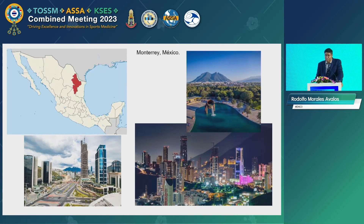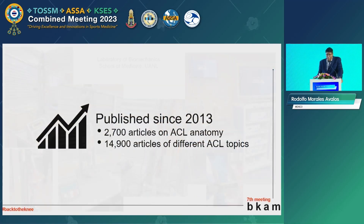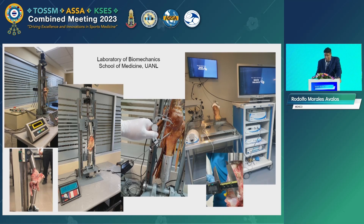This is my city. It's in the north of Mexico — it's shown in red on the map. These images are from my city, and other images are from my laboratory of biomechanics in my school of medicine. We have an arthroscopic station to do some experiments and a machine for biomechanical studies.